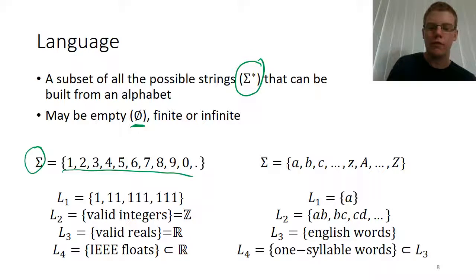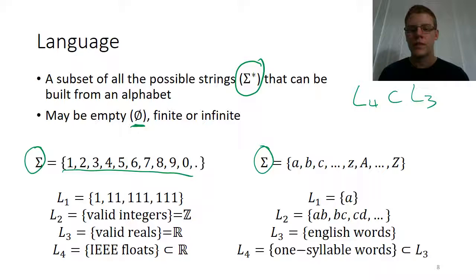So languages can be subsets of other languages. So in this case here, L4 was a subset of L3. Over here we've got a different alphabet, which is just the lower and uppercase letters. So we might have a simple language that consists of just one symbol, which in this case is one string consisting of one symbol. We might have a set of all of the length two strings. We might have a set that consists of all of the valid English words. Or we might have another set, which is a subset of L3, which is the language consisting of all of the one syllable words such as cut or cat.